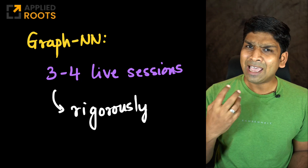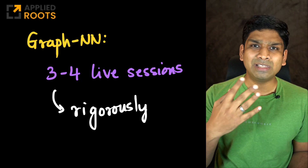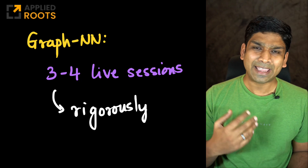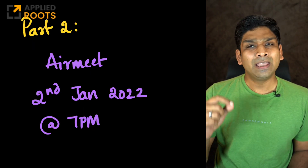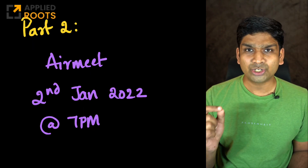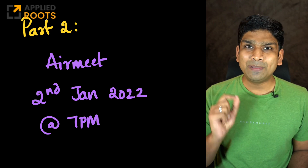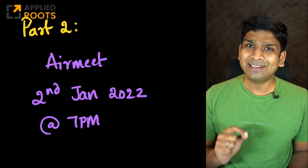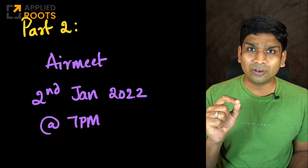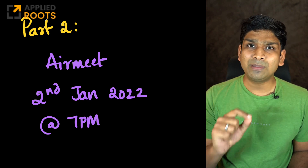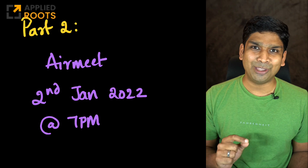We might take up to 4 live sessions, but we'll see how we progress through the second one and decide based on that. This part 2 live session of graph neural networks will be via AirMeet — you'll get an AirMeet link on your registered email addresses. Just to note, this will be on the 2nd of January, coming Sunday, at 7 p.m.